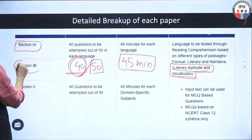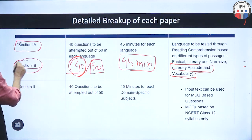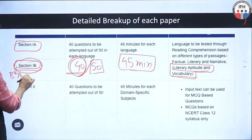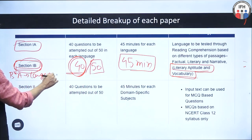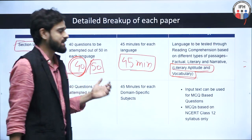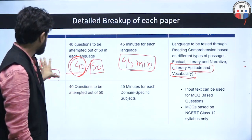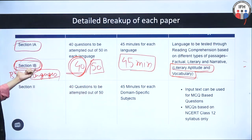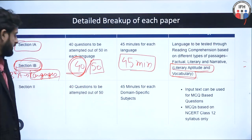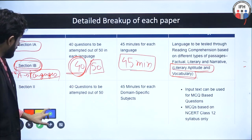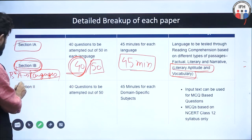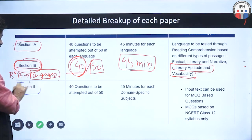Section 1B is for those applying for a BA program in languages such as English, Hindi, Arabic, or Sanskrit. It is not applicable for others. We are now going directly to Section 2.